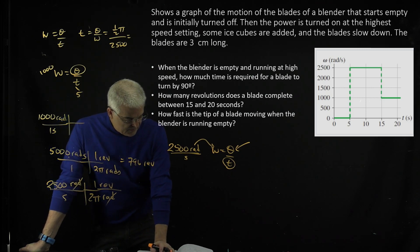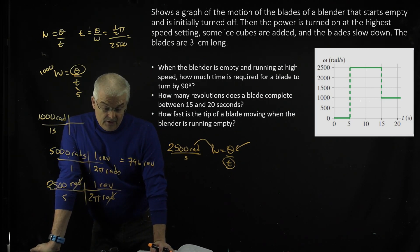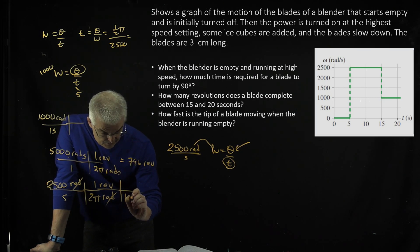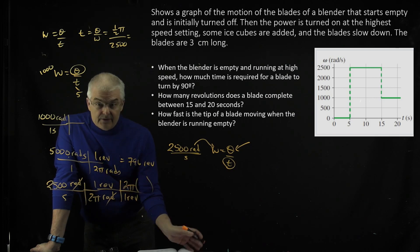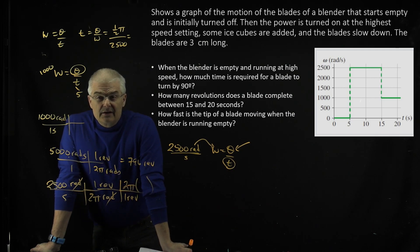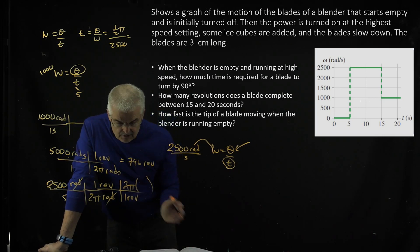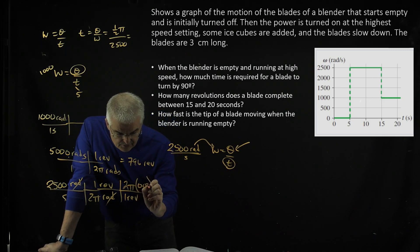And now what I want to do is I want to get revolutions into meters. Remember, 1 revolution is 2πr. So I can say 1 revolution is 2 times π times the r. Now in this case, the blades are 3 centimeters long, or 0.03 meters.